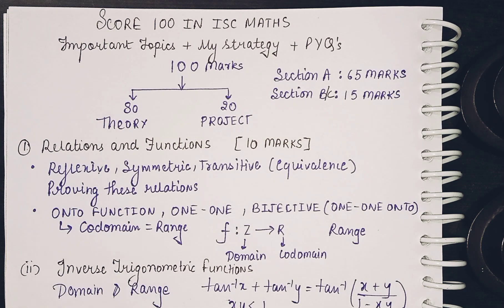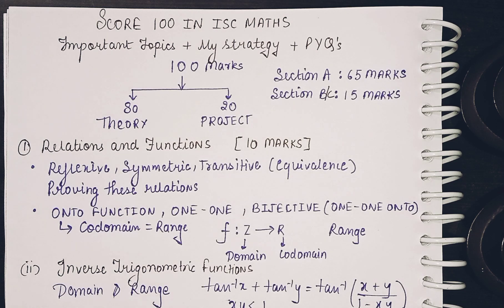Moving on to the first chapter, Relations and Functions — it comes for 10 marks and covers relations, functions, and inverse trigonometric functions. The important topics are reflexive, symmetric, and transitive relations. When these three are simultaneously present, the relation is known as an equivalence relation.